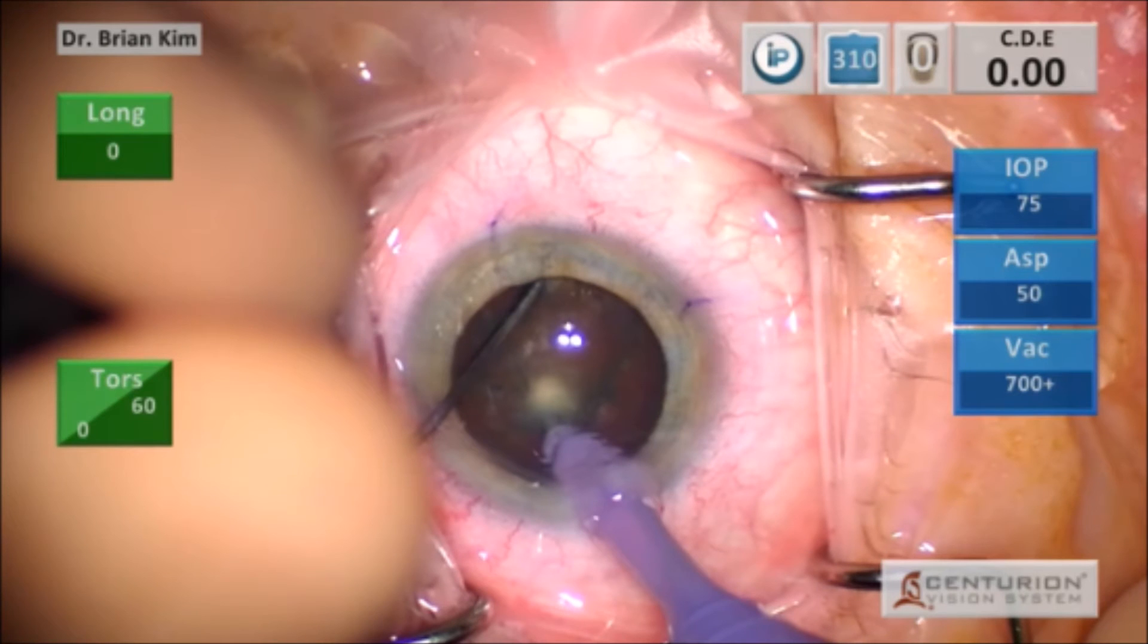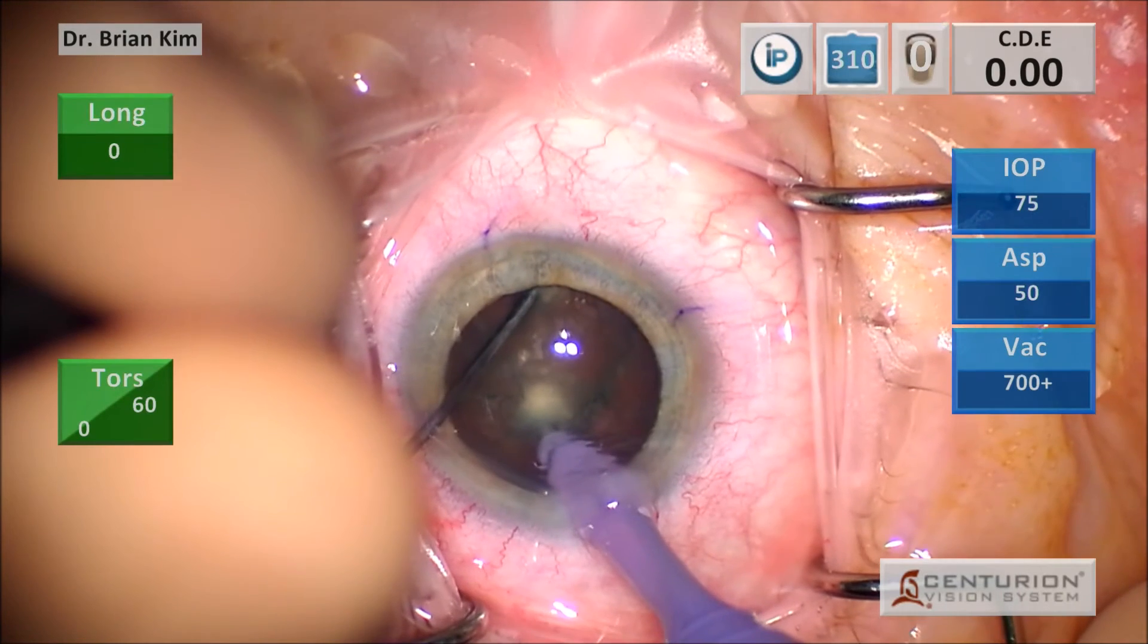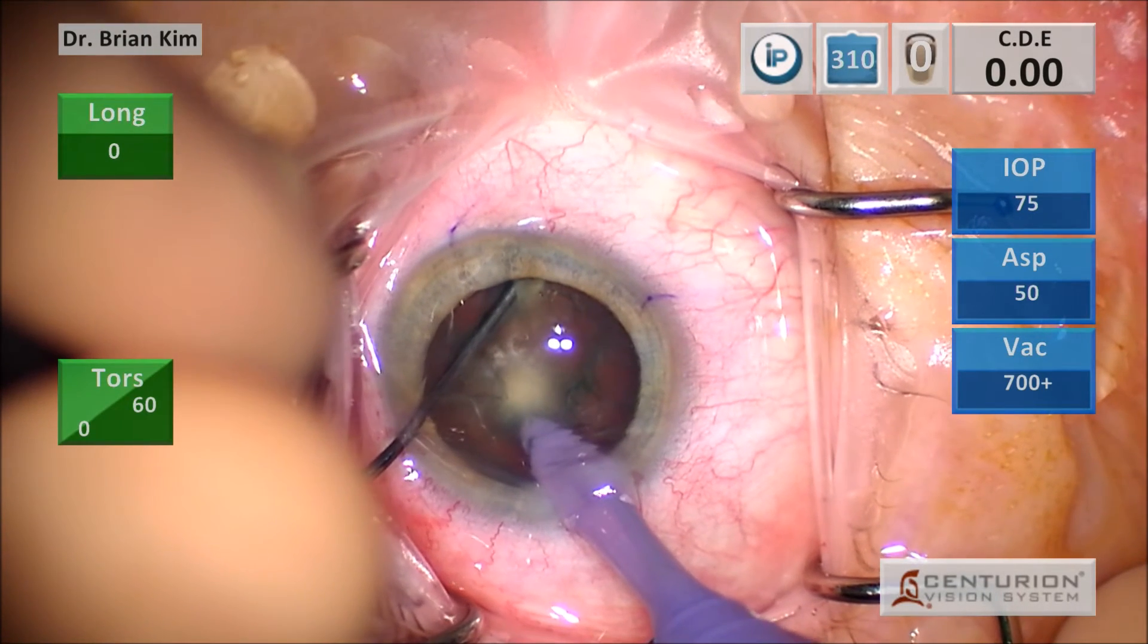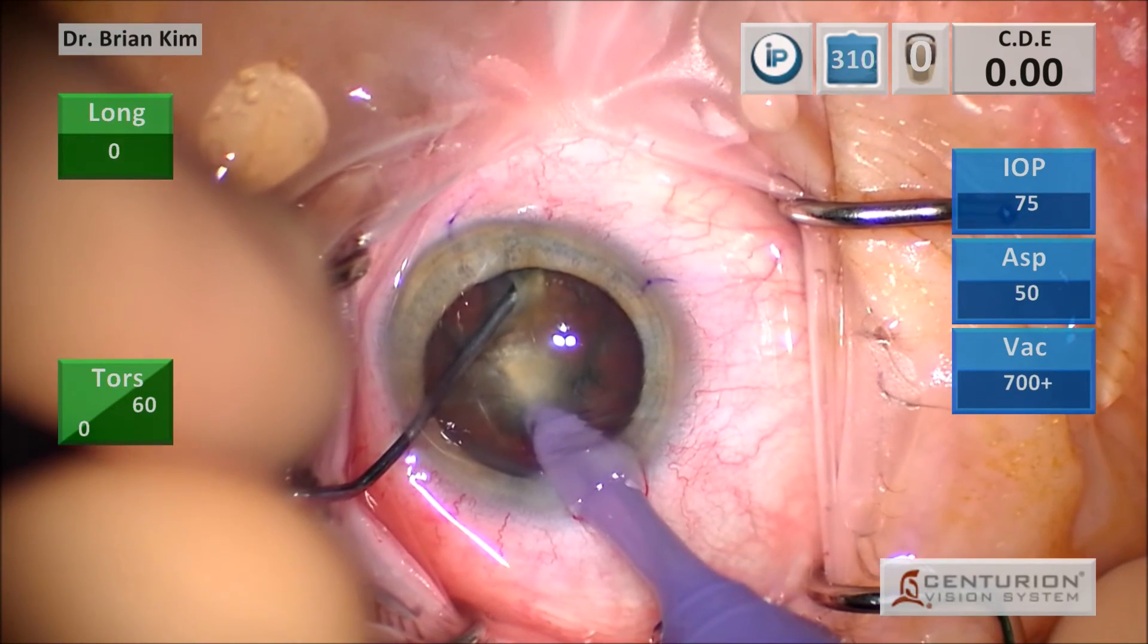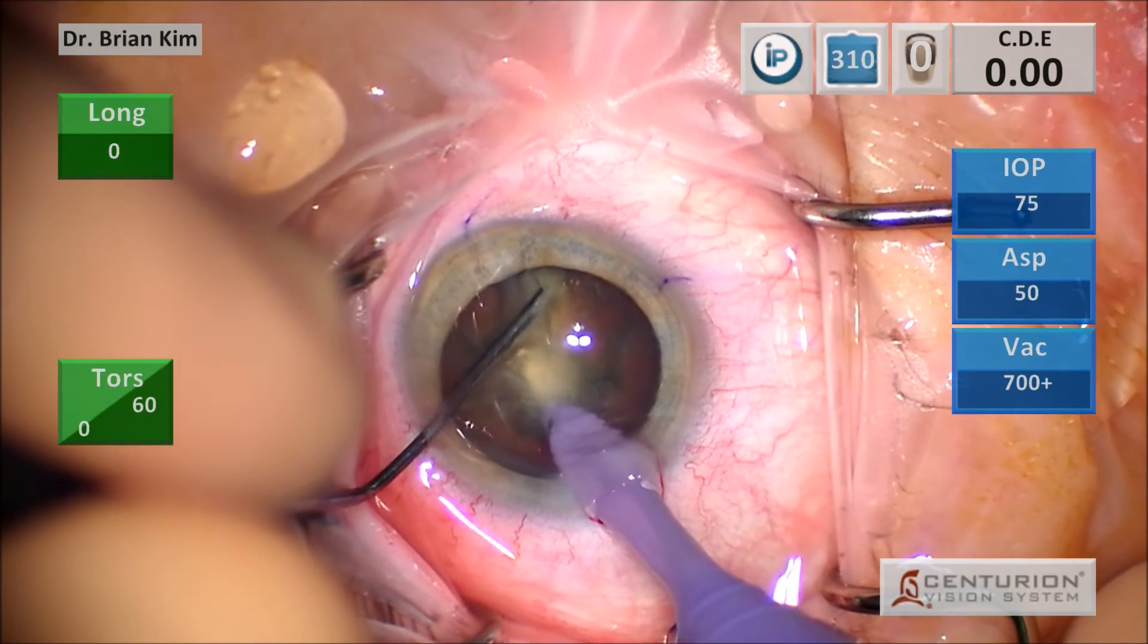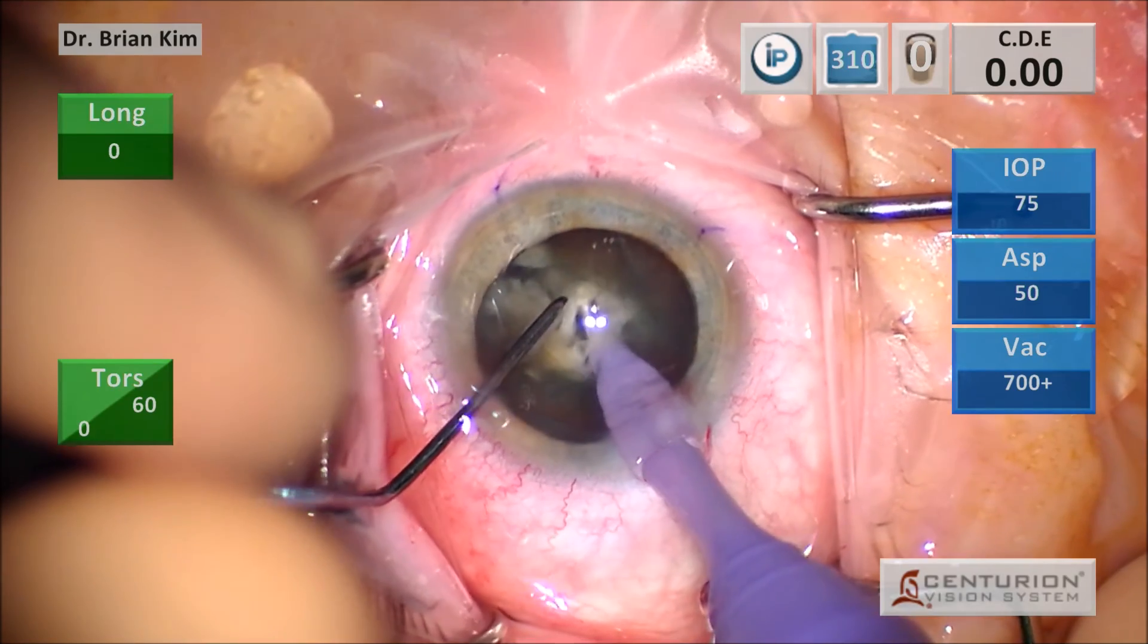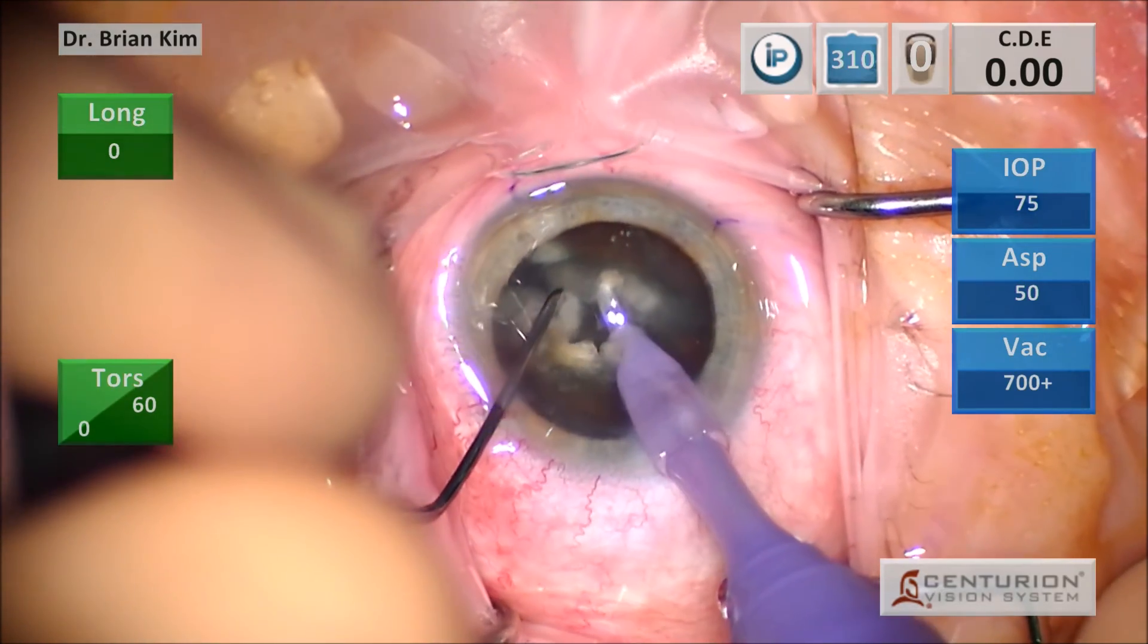So again, you can see the whitening of the lens fibers just anterior to the phaco tip as I'm getting that phaco tip in position for the double chop maneuver. As I bring both instruments to the center, you can see that whitening of the fibers is increasing. Again, this is all mechanical. No phaco or vacuum is applied, and then the lens is fractured.